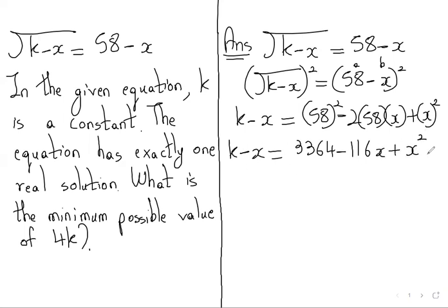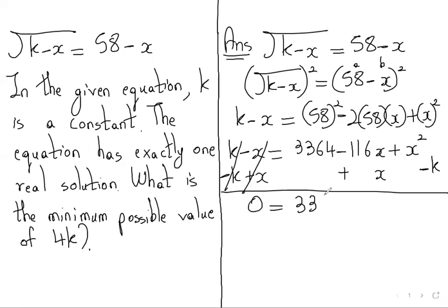Now we need everything on one side, so we will do minus k plus x here. So minus x plus x cancels, k minus k cancels. Zero is equal to 3364 minus 116x plus x—so minus 116 plus 1 is minus 115x—then plus x square minus k.